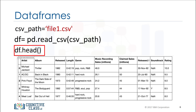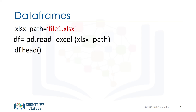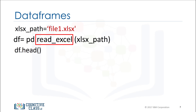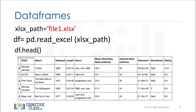We can use the method head to examine the first five rows of a data frame. The process for loading an Excel file is similar — we use the path of the Excel file, the function reads_excel, and the result is a data frame.